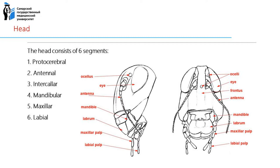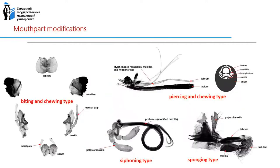The borders of the head segments are not defined. The head bears the sense organs: eyes, one pair of antennae, and three ocellate simple eyes. The antennae are diverse in morphology. The mouth parts are labrum, mandible, maxilla, and labium. The mouth parts are often specialized to the type of food, and there are several modifications and types.